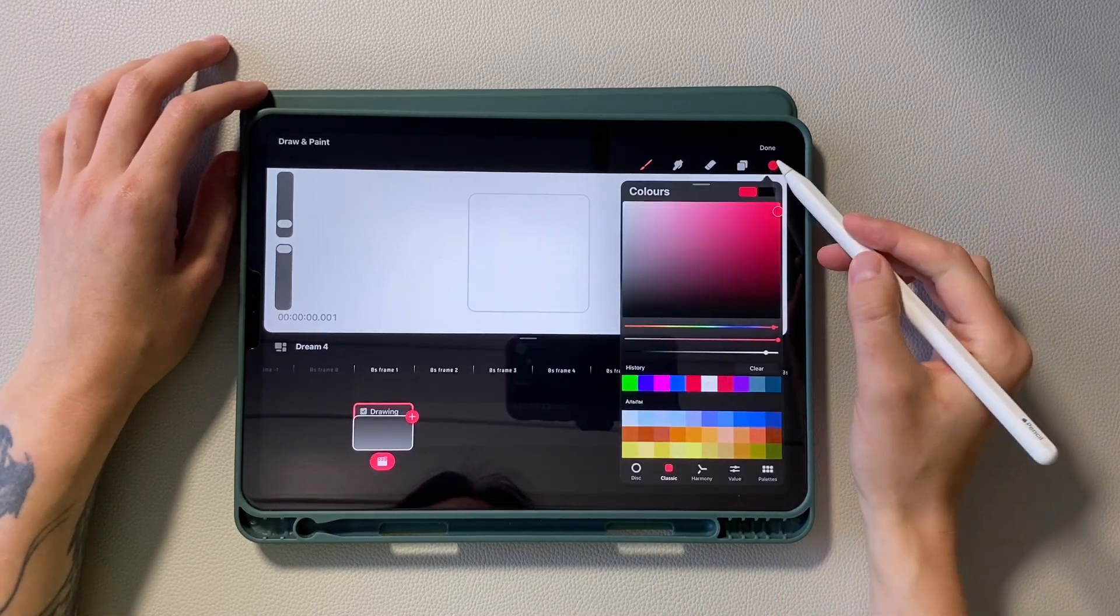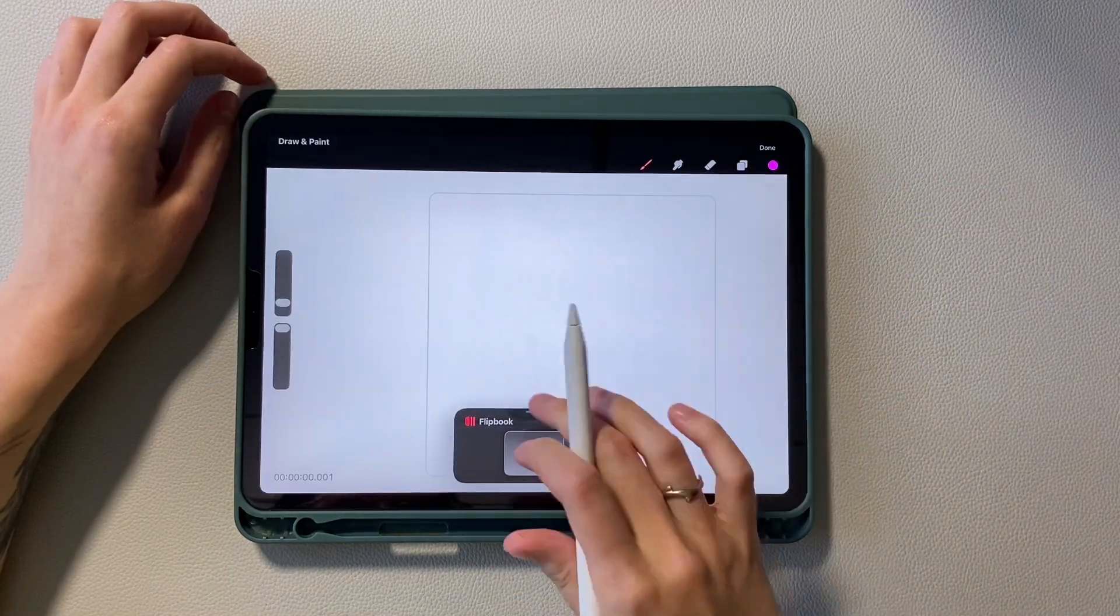Let's start by drawing the first wave. I choose a bright colour and collapse the interface into flipbook mode.